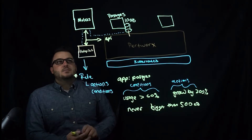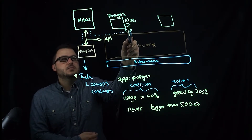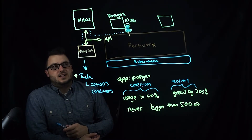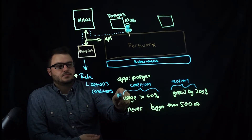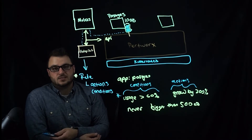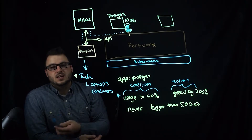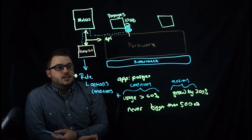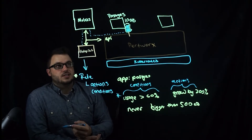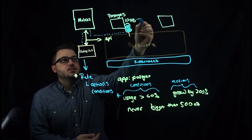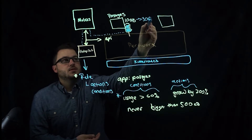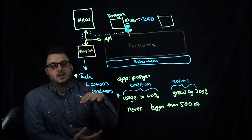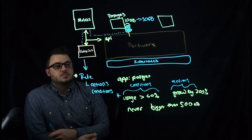Let's say Postgres starts using its volume and it starts using 6 of that 10 gigabytes — this rule kicks in. Autopilot will wait 30 seconds for conditions to stabilize; this condition needs to be true for that 30 seconds. If it is, it'll trigger this action and 10 gigabytes will become 30. That'll automatically happen — Kubernetes will become aware of it, Portworx will become aware of it, and then Postgres has more space to work with.